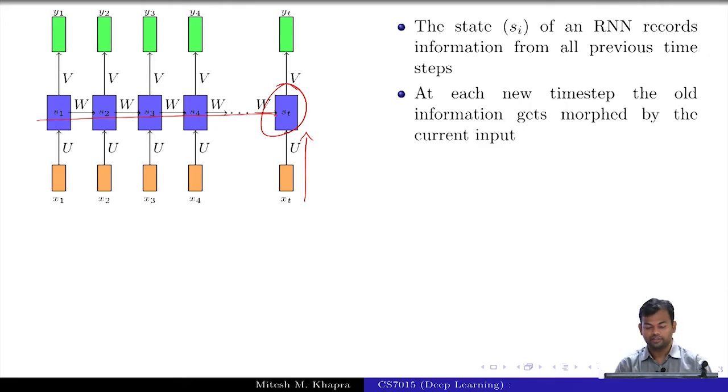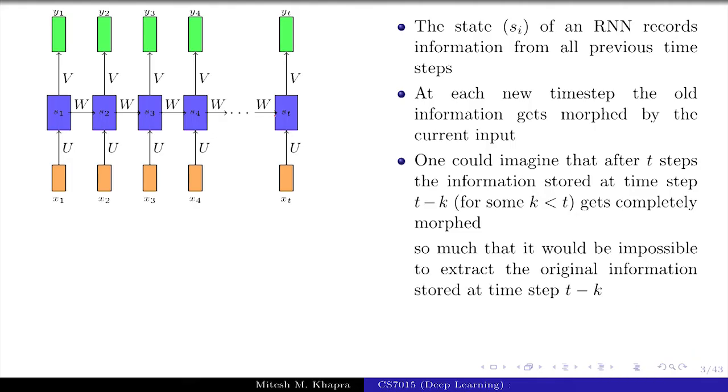But now, the issue is that this state or this blue colored vector that you see is going to be of some finite size. You will say that it is a 100 dimensional vector or a 1000 dimensional vector, but whatever be the size, it is going to be some finite dimension. Now, as you keep writing information to that cell, you are morphing the information that you had written at the earlier time steps. Because on one hand you are saying that you want to record the information from all the previous time steps, but on the other hand you just have a finite amount of memory to deal with. So it is bound to get overridden and the information will get morphed so much that it is completely impossible to say what was the original contribution at time step 1 or time step 2, once you have reached some time step 20, 30 or so on.